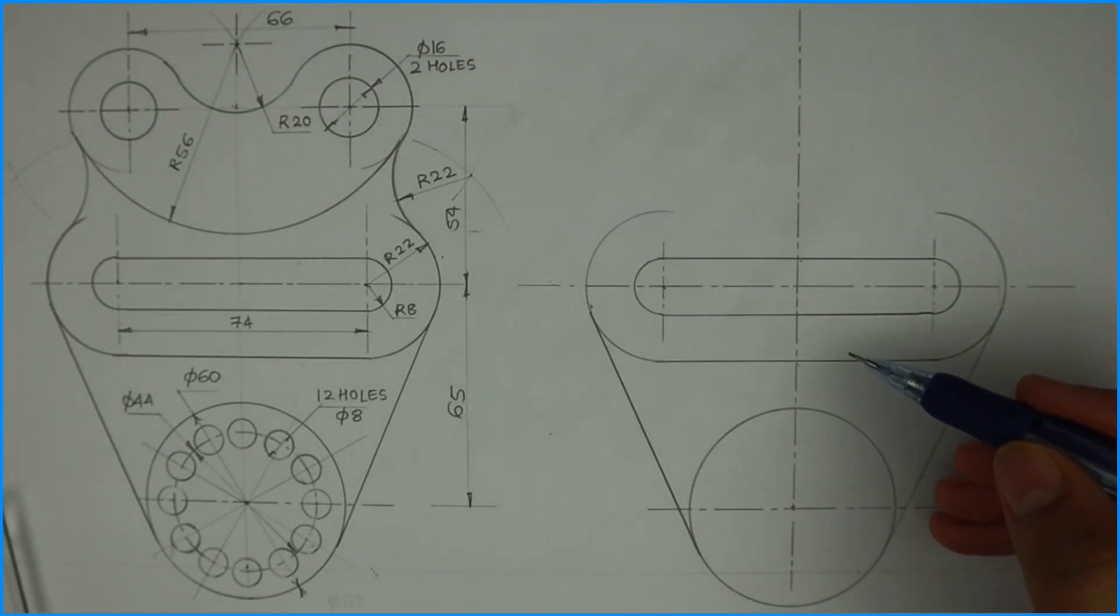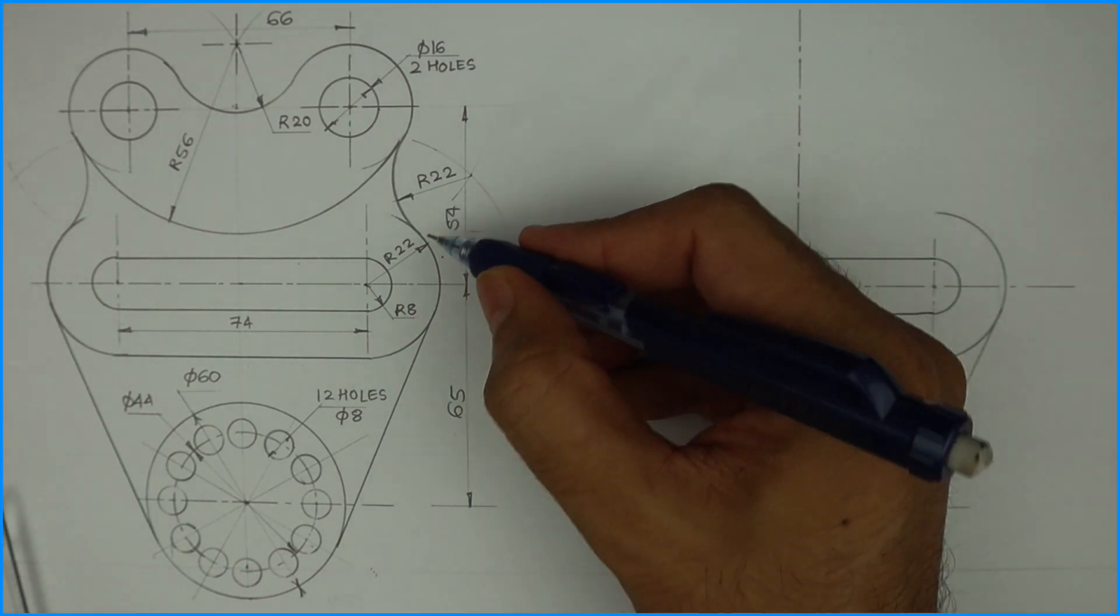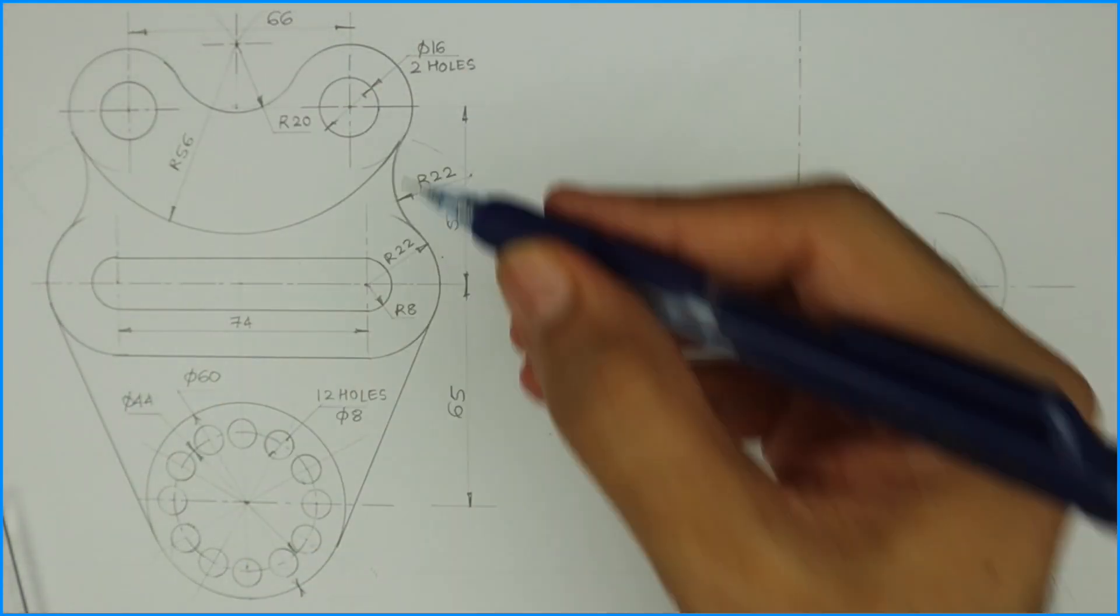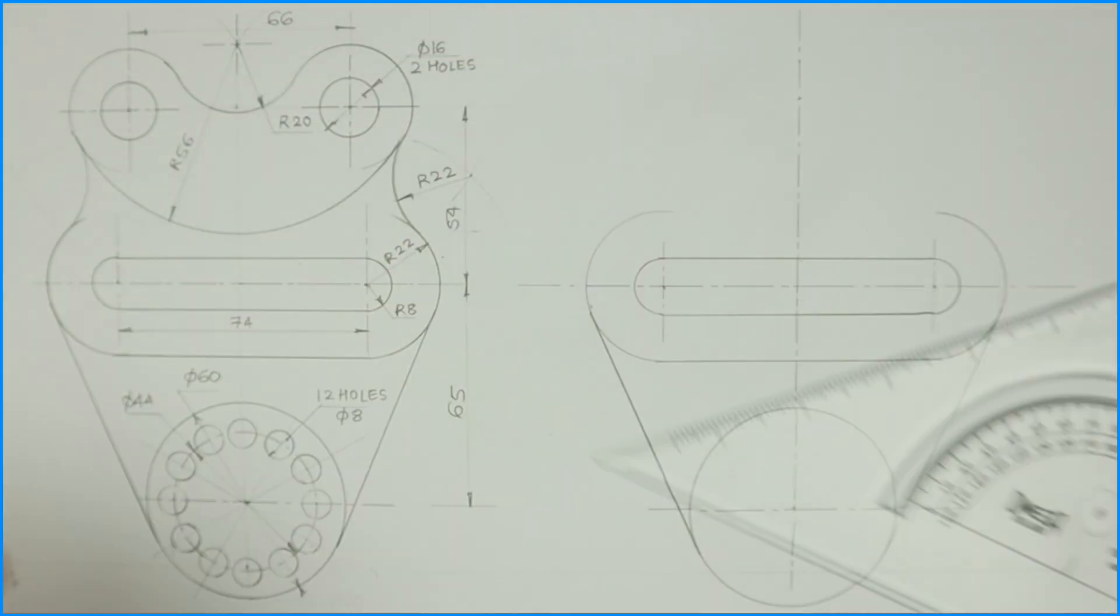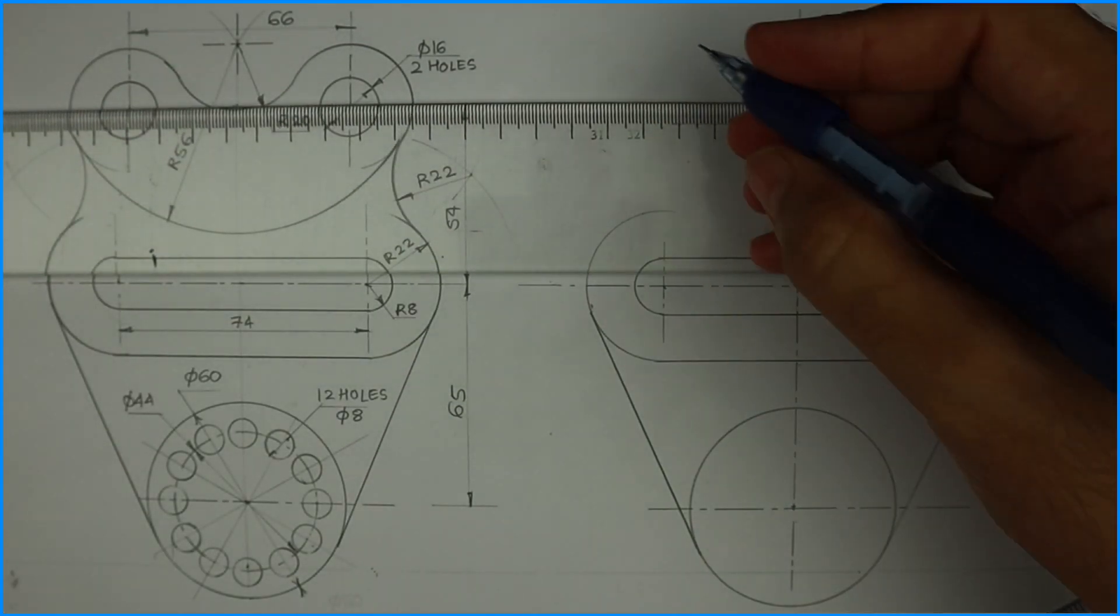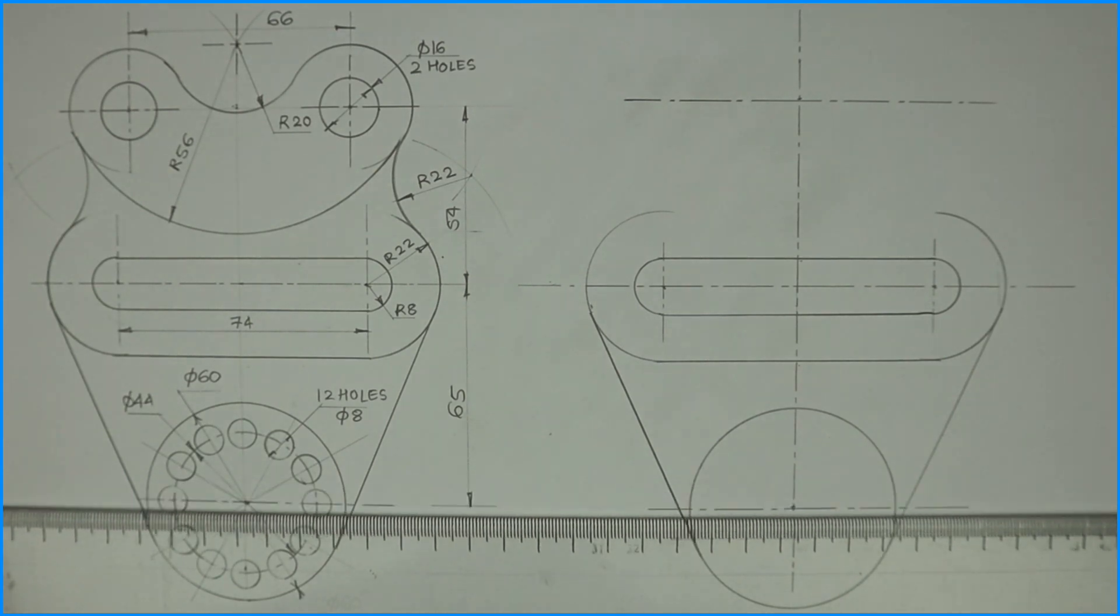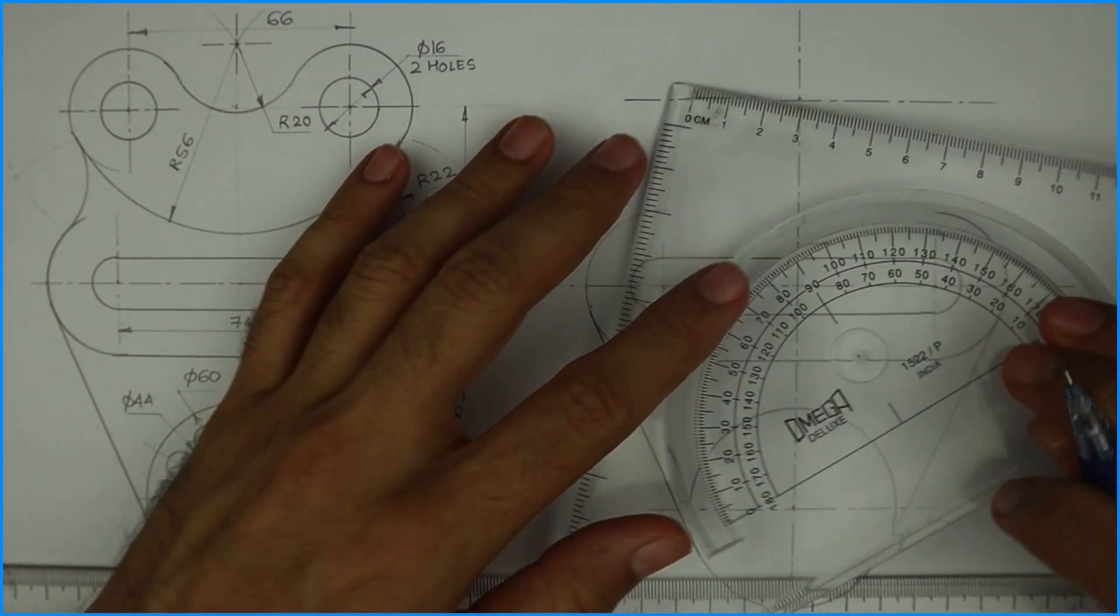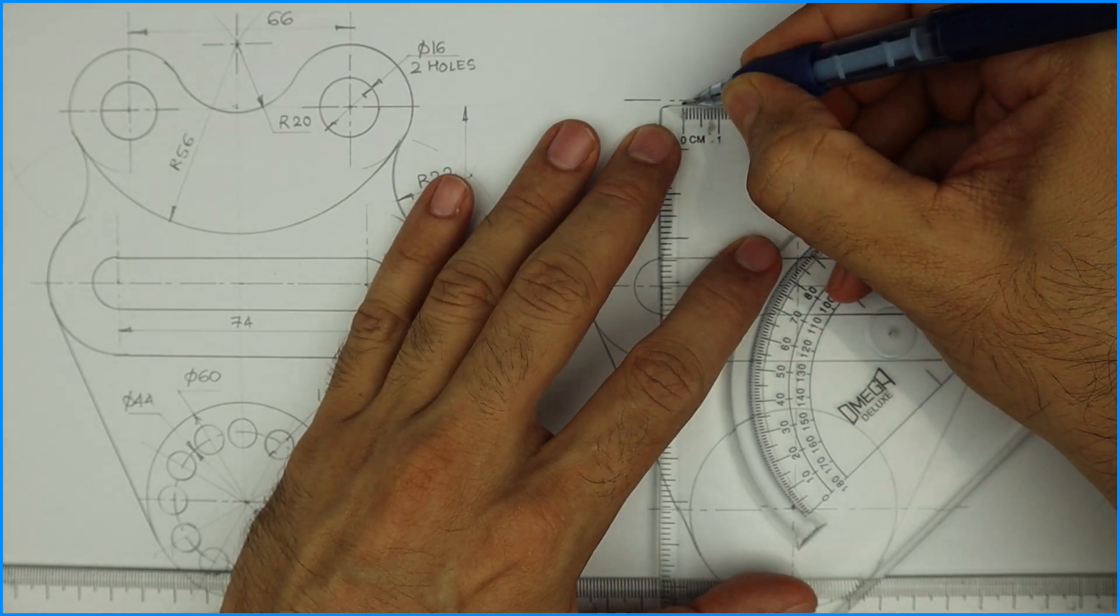Then we'll go up by 54. From the center this is 54 and we'll draw 33 on both sides. So go up by 54 and draw 33 and 33 because it is 66.